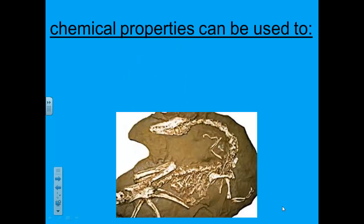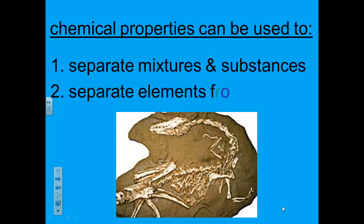Chemical properties can be used to separate mixtures and substances and separate elements from solutions. Substances in some mixtures can be separated by physical means — for example, you can separate salt and pepper because they have different physical properties. Substances may also have different chemical properties that can be used to separate them from one another.